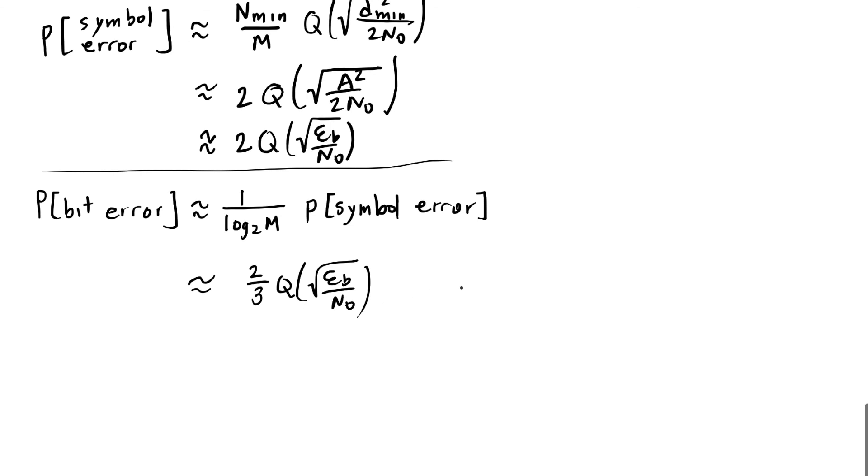Since it's an approximation, we can write the probability of bit error using the approximation for the gray coding, just noting that it's not going to be quite as accurate as it would be for PSK or square QAM.